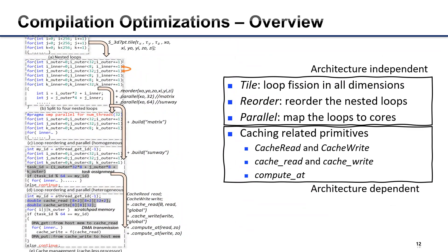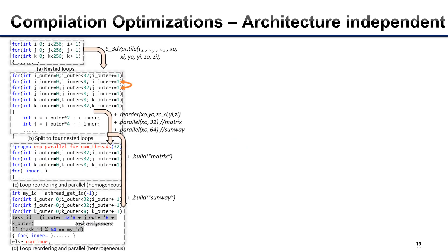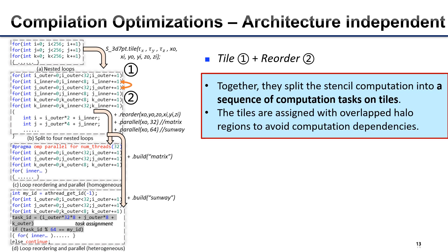To achieve high performance on emerging many-core processors, we implement architecture-independent optimization primitives: tile, reorder, and parallel. Additionally, we provide caching primitives on Sunway. The tile and reorder primitives together split the computation into a sequence of computation tasks on tiles, and these tiles are assigned with overlapped halo regions to avoid computation dependency.